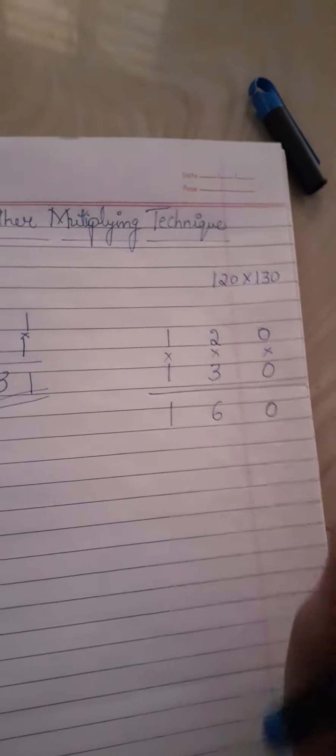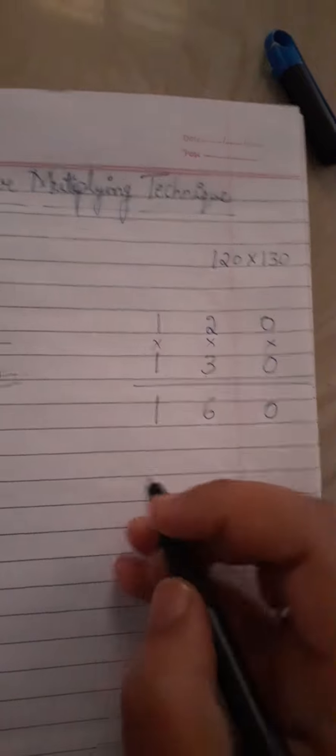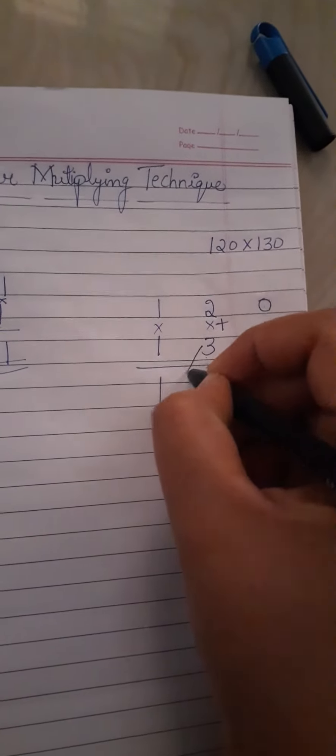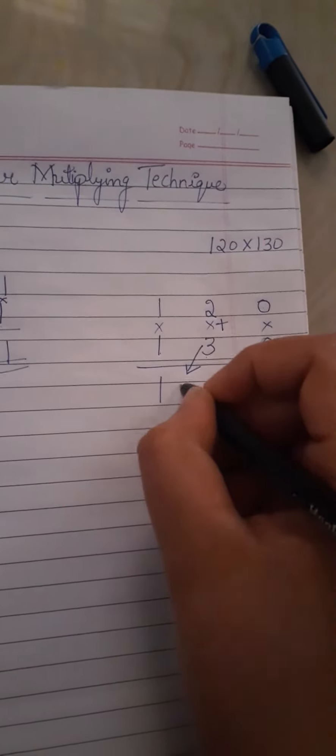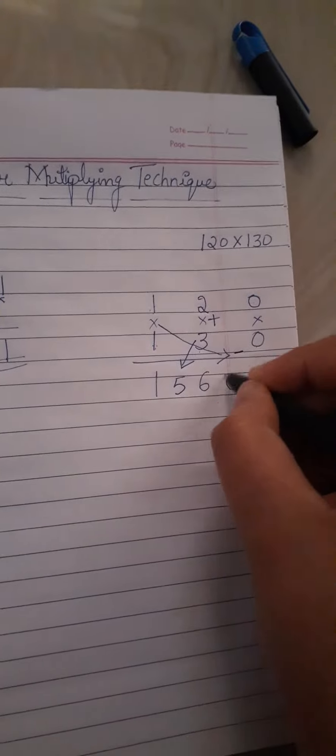Afterwards, in the next step, this one 3 plus 2 we need to keep here, 5, and this is 1. So this is coming like this, that is why we need to subtract 1 minus 1 is 0, okay?